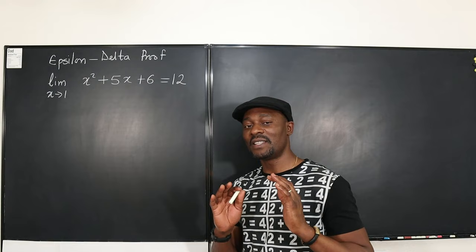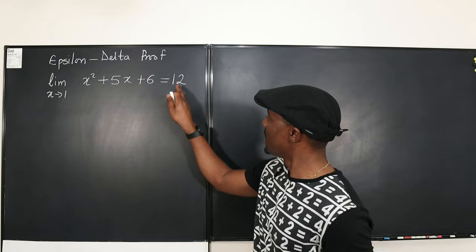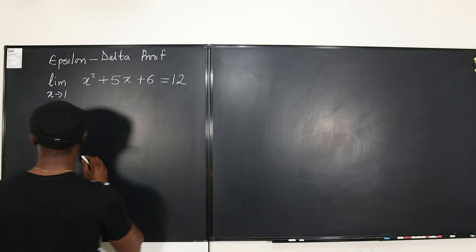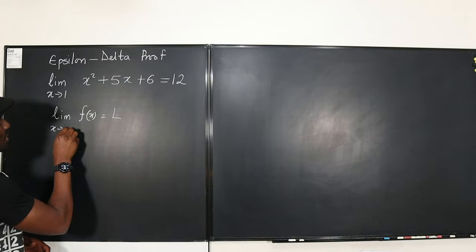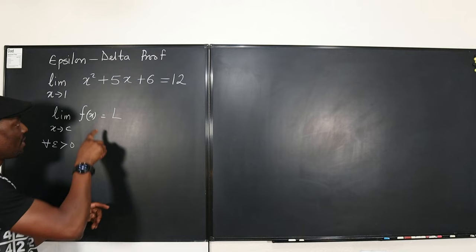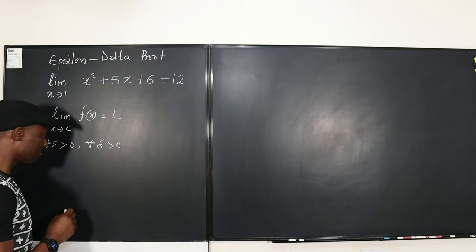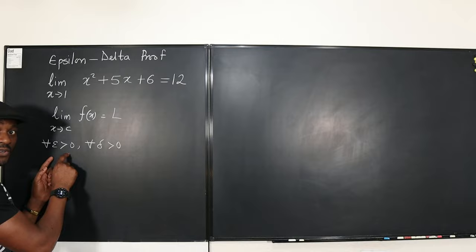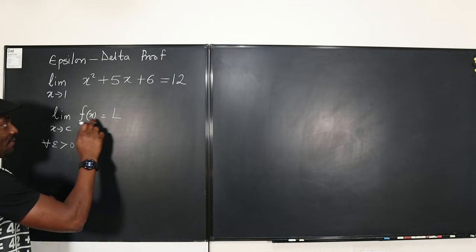First, let's write the delta-epsilon statement that allows us to do the proof. It says: if the limit of a function is L — in this case the limit is 12 at a point C — then the limit of f(x) equals L as x approaches C. This means that for all epsilon greater than zero, which is how much the function moves away from the limit, and for all delta greater than zero — both are distances, so they must be positive — there exists a delta for all epsilon greater than zero.